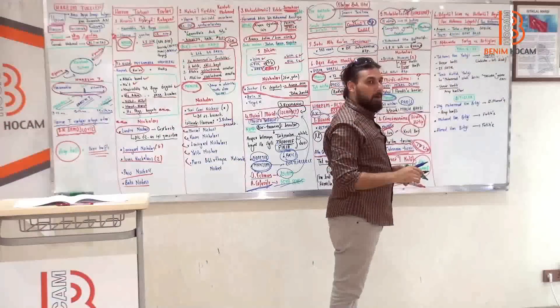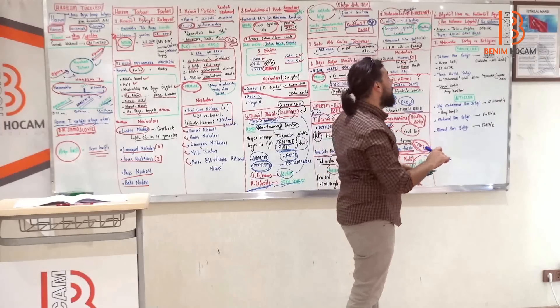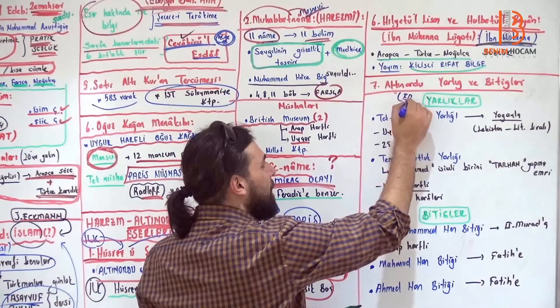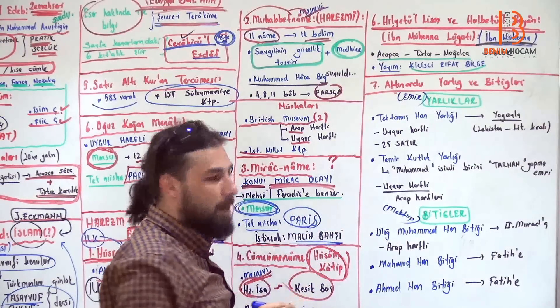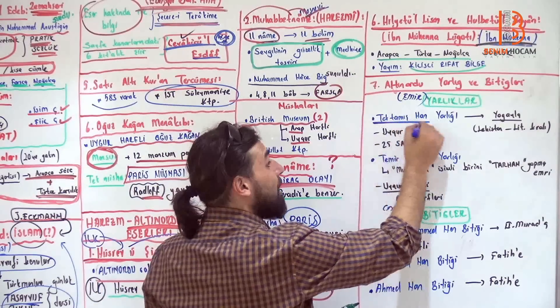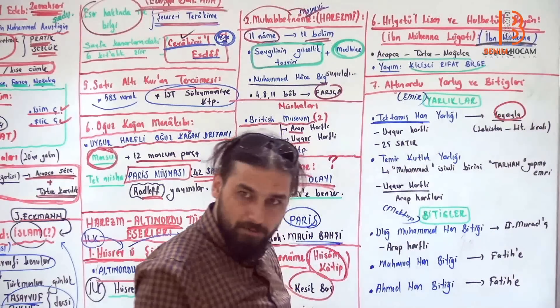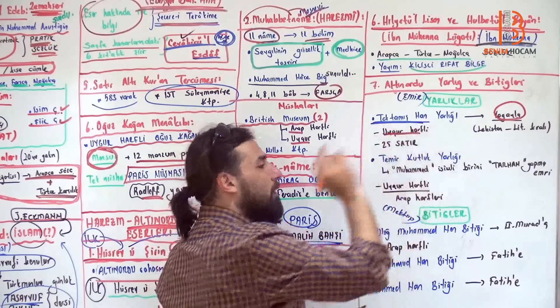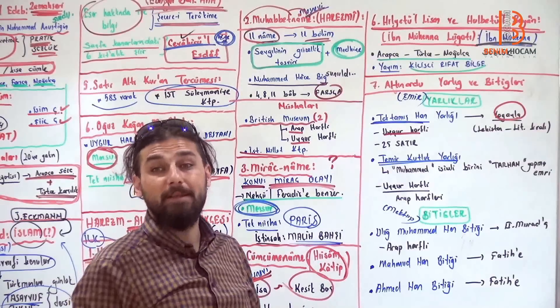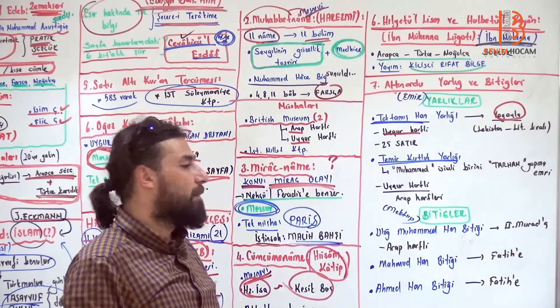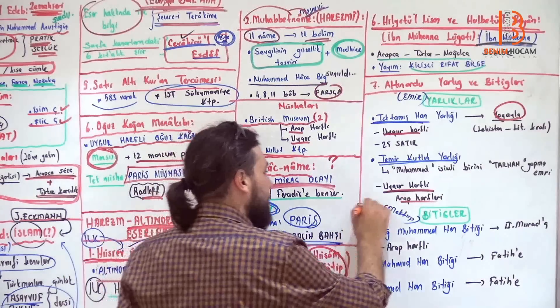Altınordu yarlık ve bitikleri. Altınordu yarlıklar. Bakalım Altınordu hanılarının kimler? Yarlık emir vermişler. Emirler. Şunu yarlıkları emir olarak düşünebilirsin. Bitikleri de bir nevi mektup olarak düşünebilirsin. Toktamış Han Yarlığı. Toktamış Han, Lehistan Litvanya Kralı Yogayla'ya yazmıştır. Uygur harflidir, 25 satırdır. Dikkat et ne bak Uygur harflini kullanıyor Altınordu hanılarının. Geldim, Temirkutluk Yarlığı. Temirkutluk Muhammed isimli birini Tarhan yapmıştır. Bu yönde verdiği emirdir. Uygur harflidir. Altında Arap harfli bölüm de vardır.